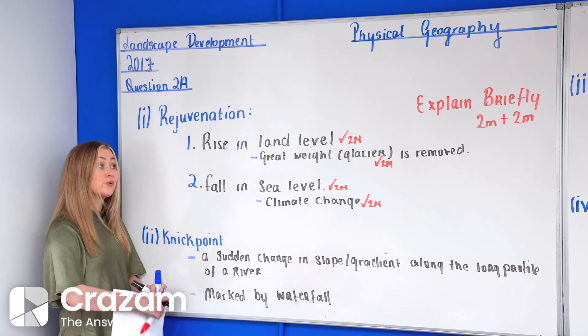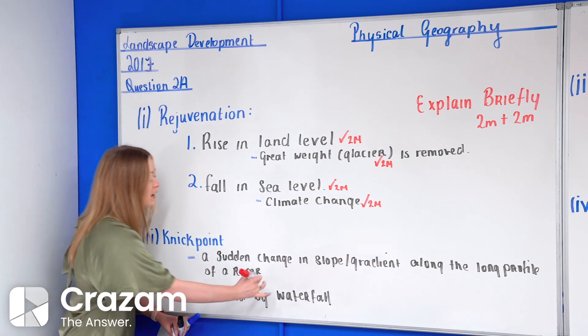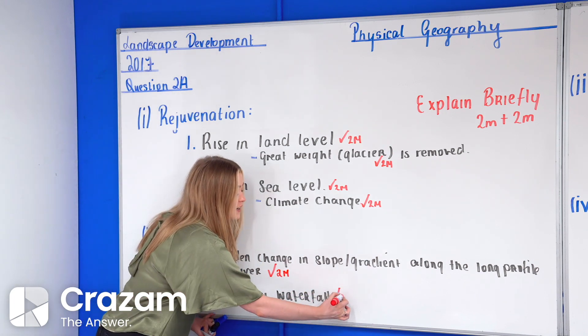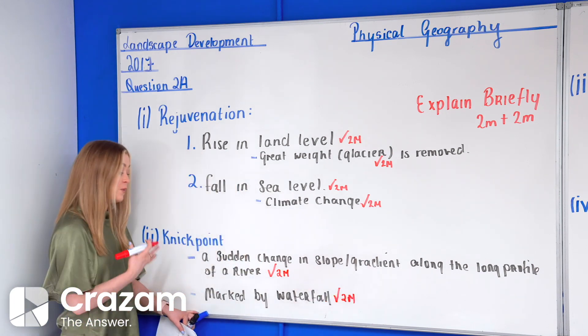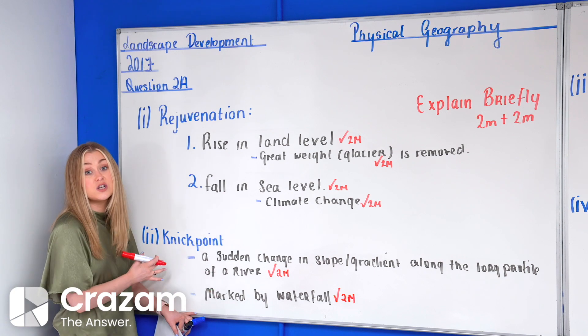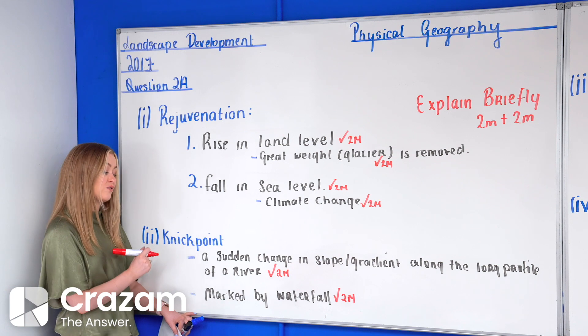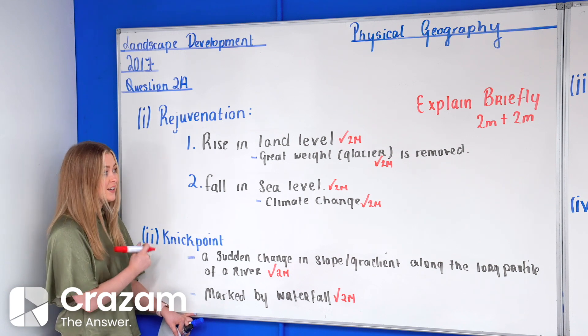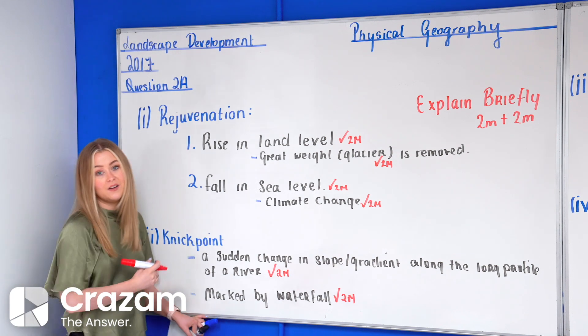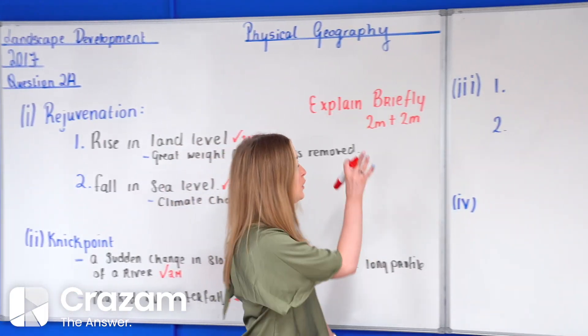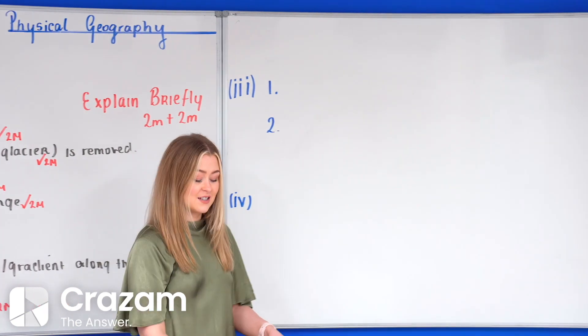But in this case a nick point can cause it to occur in the mature stage of the river also. Now marking scheme wise, again briefly explained means two marks plus two marks. So we're getting two marks for our first point and two marks for our second point. Remembering this waterfall is usually found mature, less often, but can be found in the old age stage because of rejuvenation also. Now that's part number one and part number two. Very unusual structure that our more difficult parts were the first two parts with our kind of shorter, simpler questions towards the end.